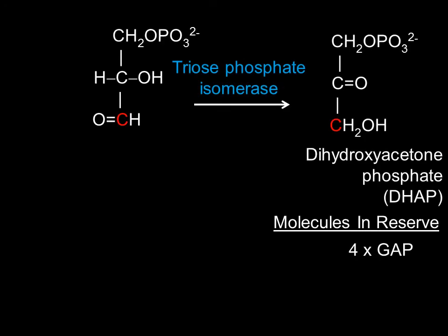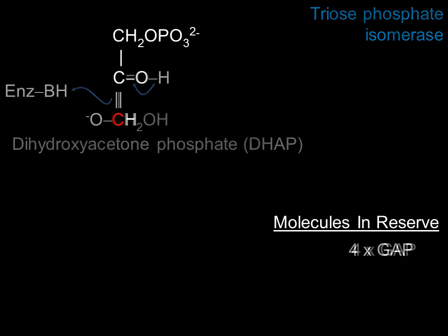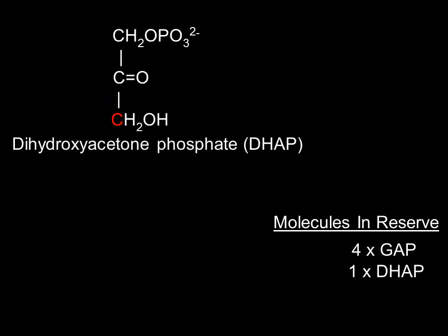The next reaction will use triose phosphate isomerase to convert two of the glyceraldehyde-3-phosphates to two dihydroxyacetone phosphates, or DHAP. The previous reaction is repeated once more to generate a second dihydroxyacetone phosphate.